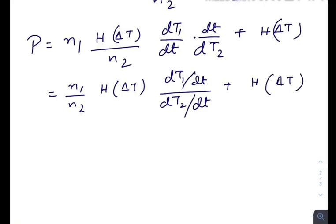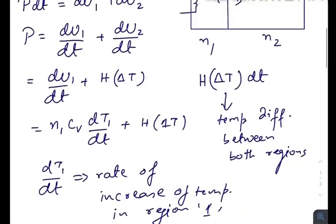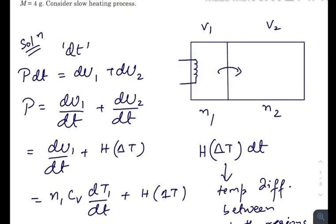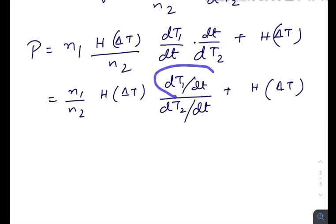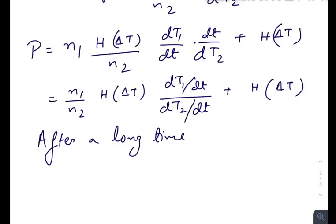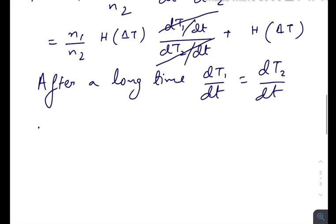Now as the source is supplying energy, the temperature here is increasing and the temperature here is also increasing. But after a long time when the system will become stable, the rate of increase in temperature in both regions will be same. So after a long time, if rate of increase in temperature will be same in both regions, then dT1/dt equals dT2/dt, so you can cancel these out.